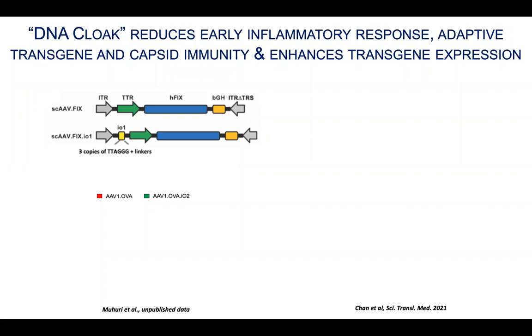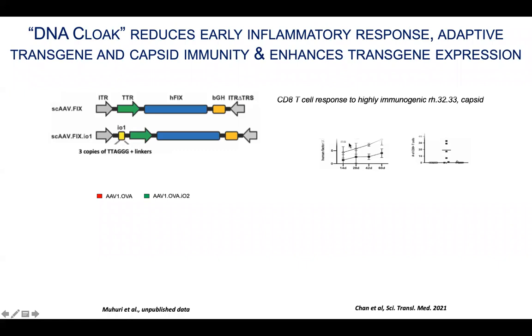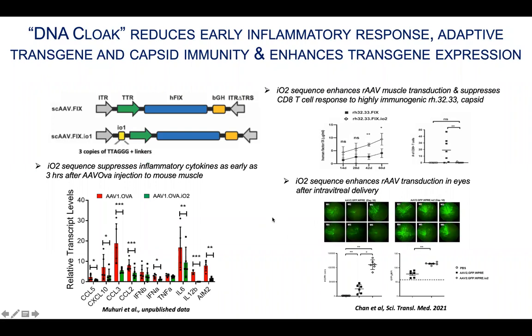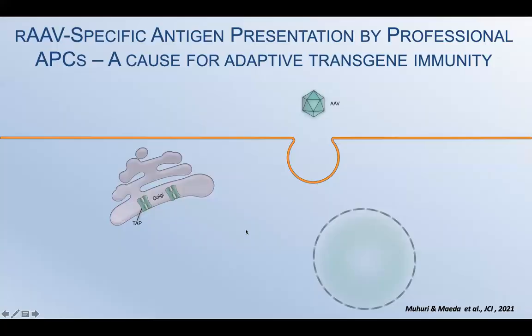Recently, George Church and Yan Kai Cheng came up with a very elegant design to inhibit DNA sensing. They incorporated a TOLL-like inhibitory sequence into the AAV genome. They found this sequence can enhance AAV muscle transduction and suppress cGAS-STING responses. They also found it can enhance AAV transduction in the eye after intravitreal delivery. Our lab also tested this system and found this sequence can suppress inflammatory cytokines as early as three hours after AAV intramuscular injection.